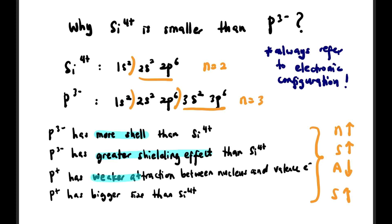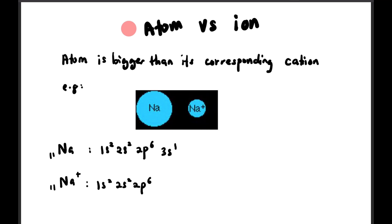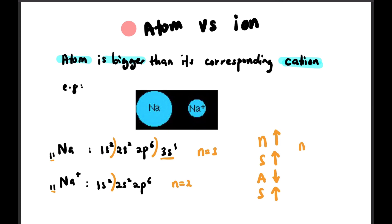Always remember to use electronic configuration as reference, no matter which factor you use — NSAS or PIZAZZ. Now let's compare atom versus ion. An atom is generally bigger than its corresponding cation. For example, Na versus Na⁺: Na is bigger because Na has 3 shells, while Na⁺ only has 2 shells. The factor we use here is NSAS: more shells → greater shielding effect → weaker attraction between nucleus and valence electron → bigger size.